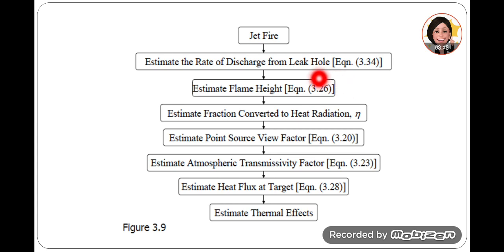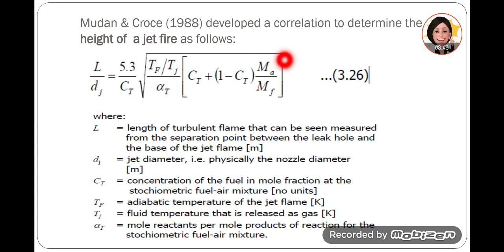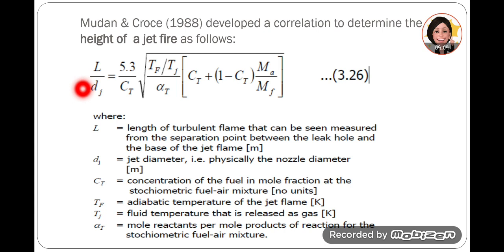That is how we estimate the rate of discharge from the leak hole. Next, we estimate the flame height using the correlation by Mudan and Cross (1988) to determine how high the jet fire can go. In this equation, L is the length of the flame measured from the point between the leak hole and the base of the jet flame, and Dj is the jet diameter.